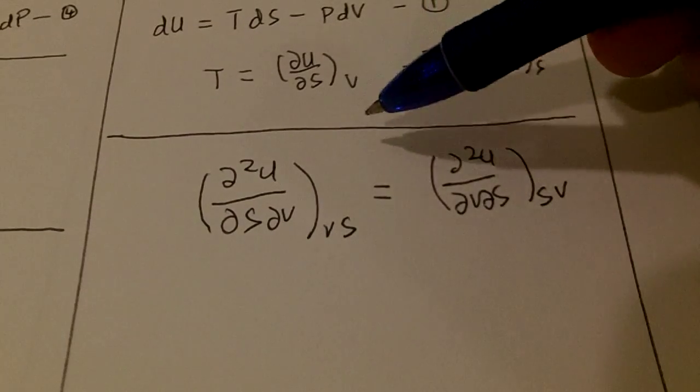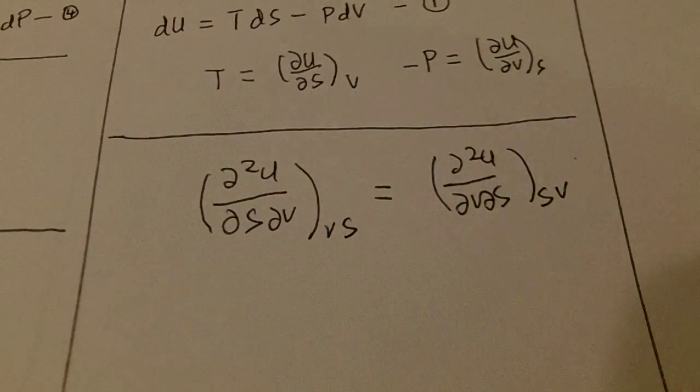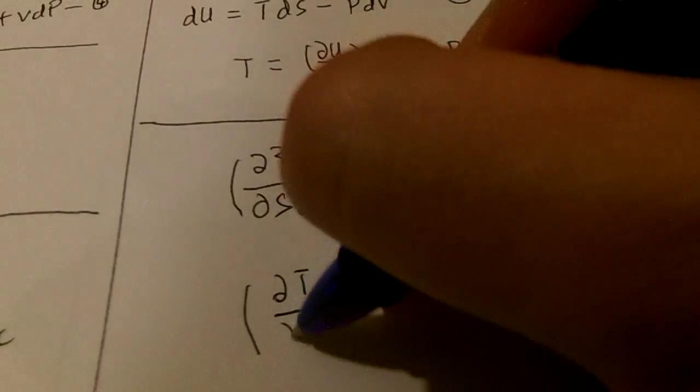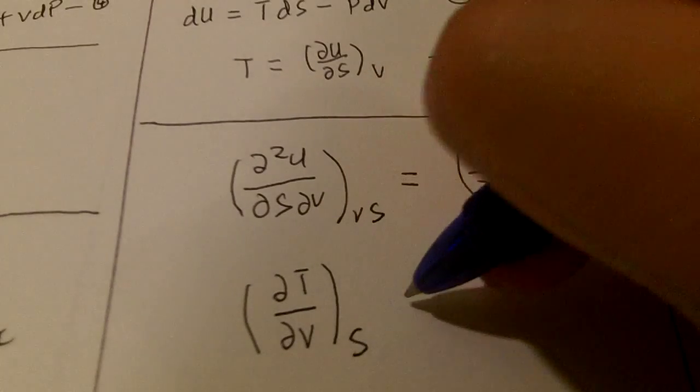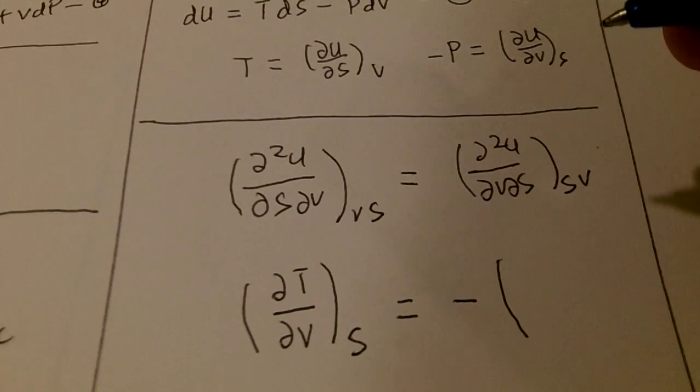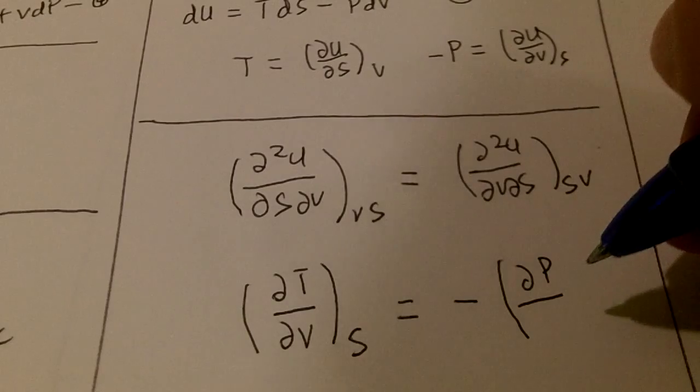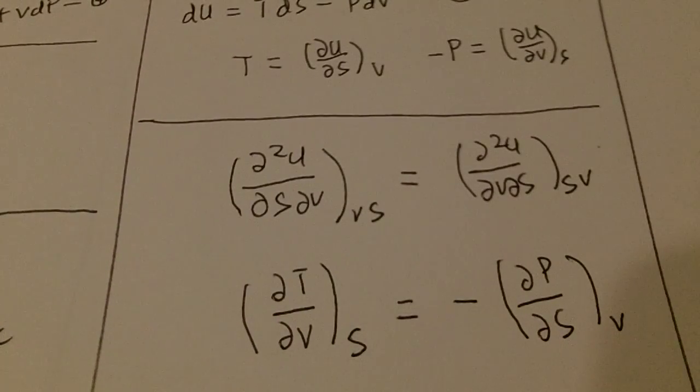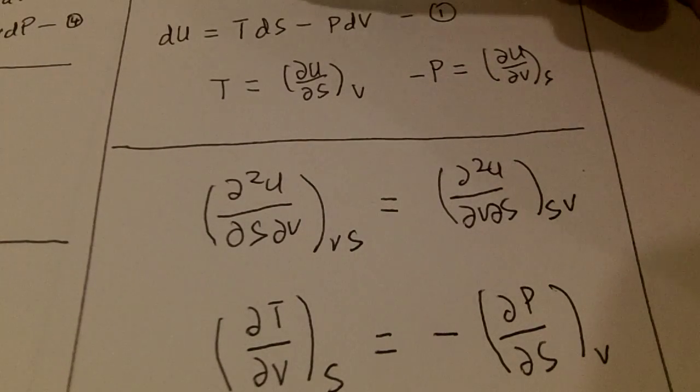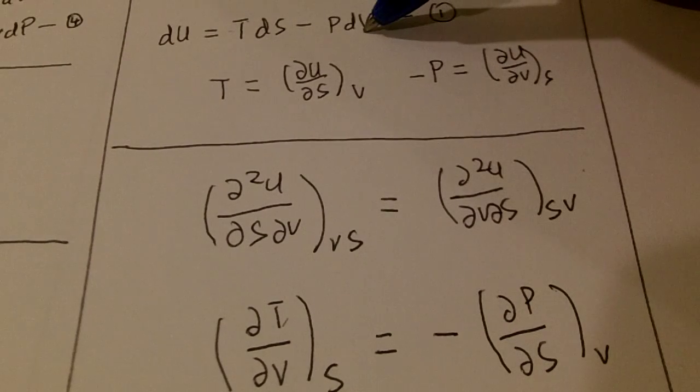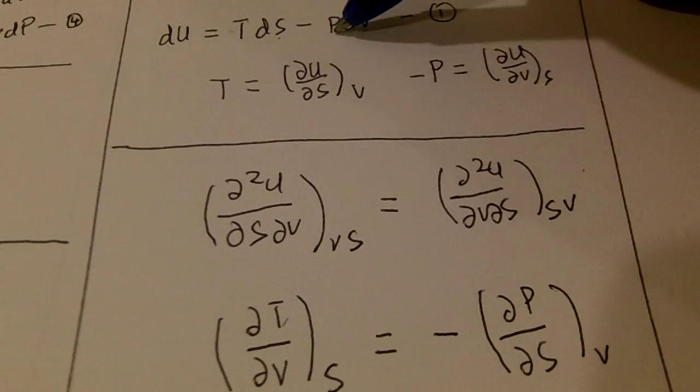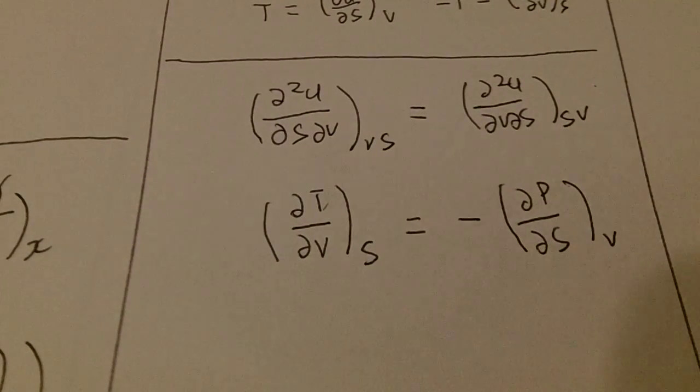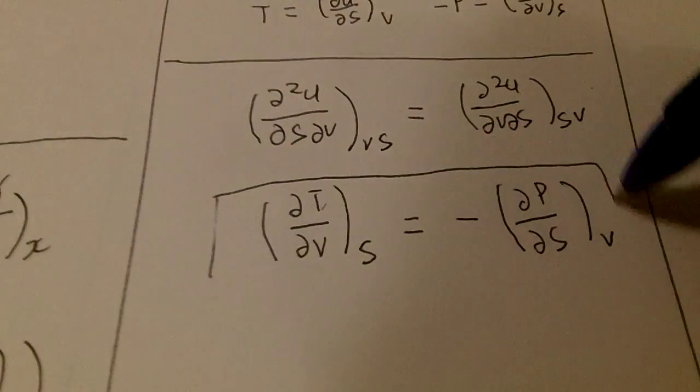Now, we compare the relations here to del s. And what do we get? Del T del V S equals to negative del P del S holding V constant. Now what do you notice? At the end of all this, you can see that T you differentiate with respect to V, keeping S constant, and negative P here you differentiate with respect to S holding V constant. So that's the net result of what we have just done. This is one of the first Maxwell relations for thermodynamics.